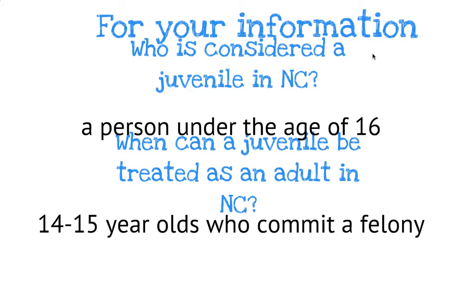When can a juvenile be treated as an adult in North Carolina? This did not change — you can still be treated as an adult at 14 or 15 years old if you commit a serious felony. The reasoning behind that is if you commit a serious crime at 14 or 15 years old, the rationale is that you knew what you were doing — you were of cognizant mind to commit that crime. It's different if you're five or six years old, but when you're 14 or 15, you have control over your actions, and you will be charged with a felony and tried as an adult.